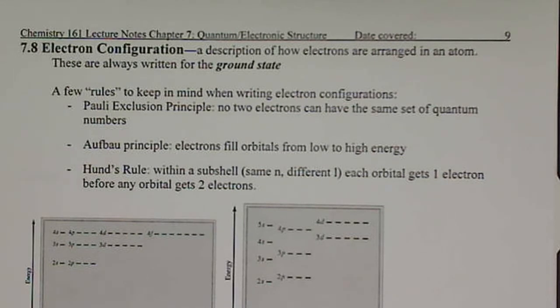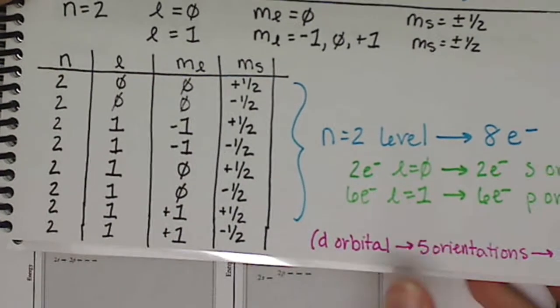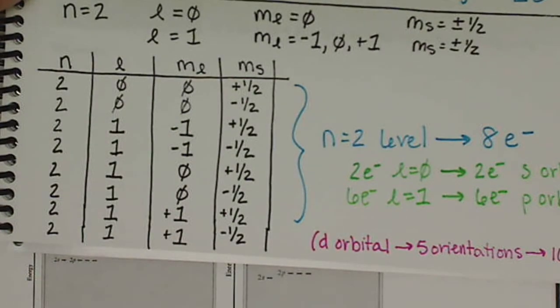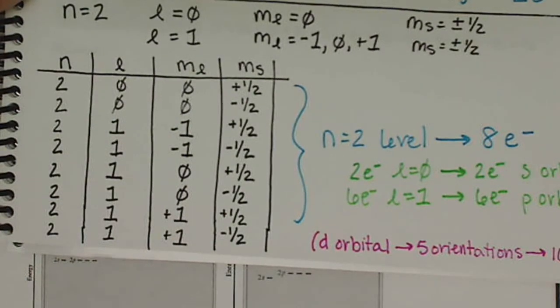With the previous video, we saw that we have our quantum numbers, our set of four quantum numbers combined, putting them all together, will describe each electron that's found on an atom.